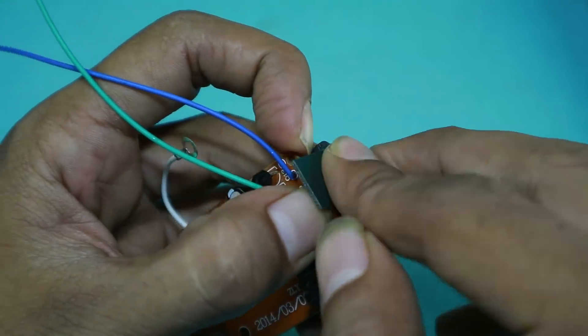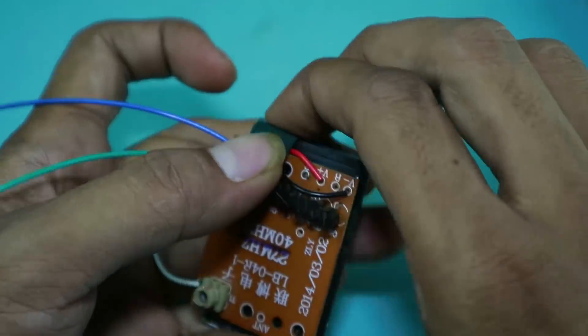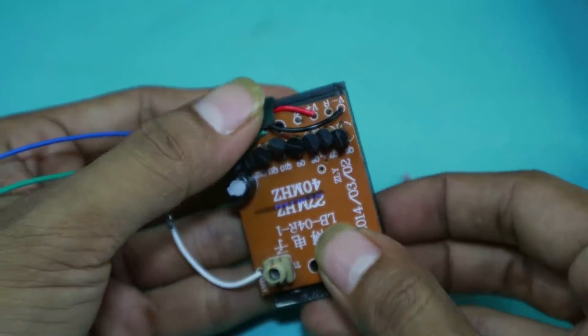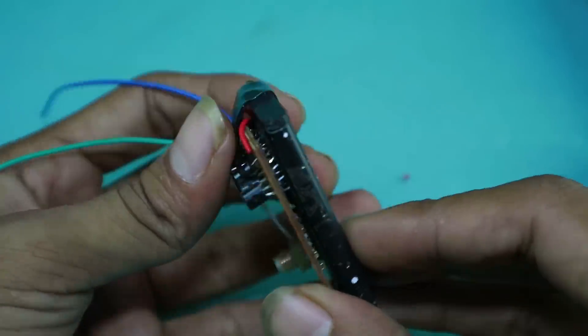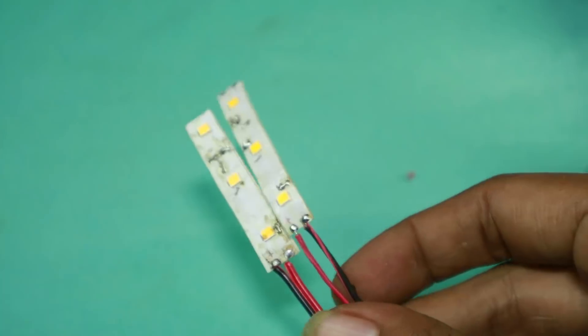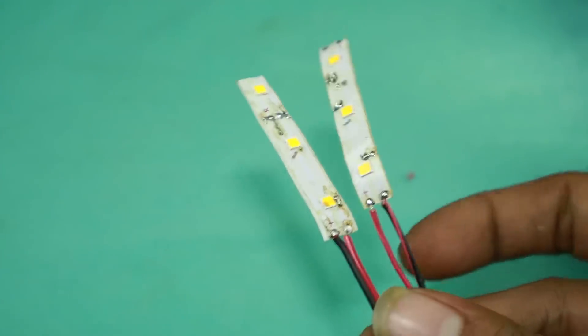Terus kita sambung plus minusnya, itu input arusnya. Ini kita siapkan lampu sesuai kapasitas baterai, misalnya 3V.